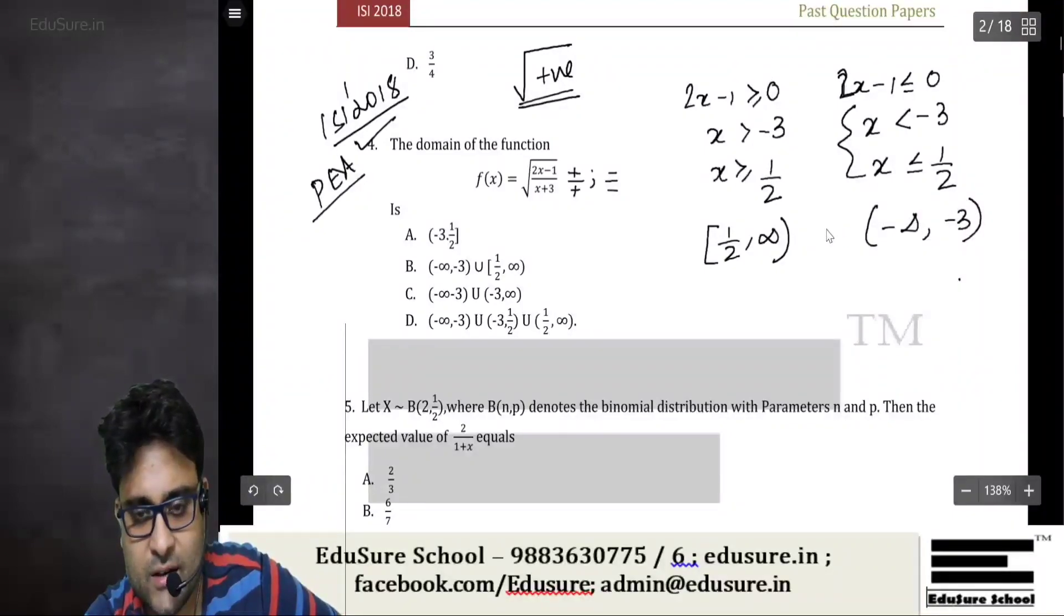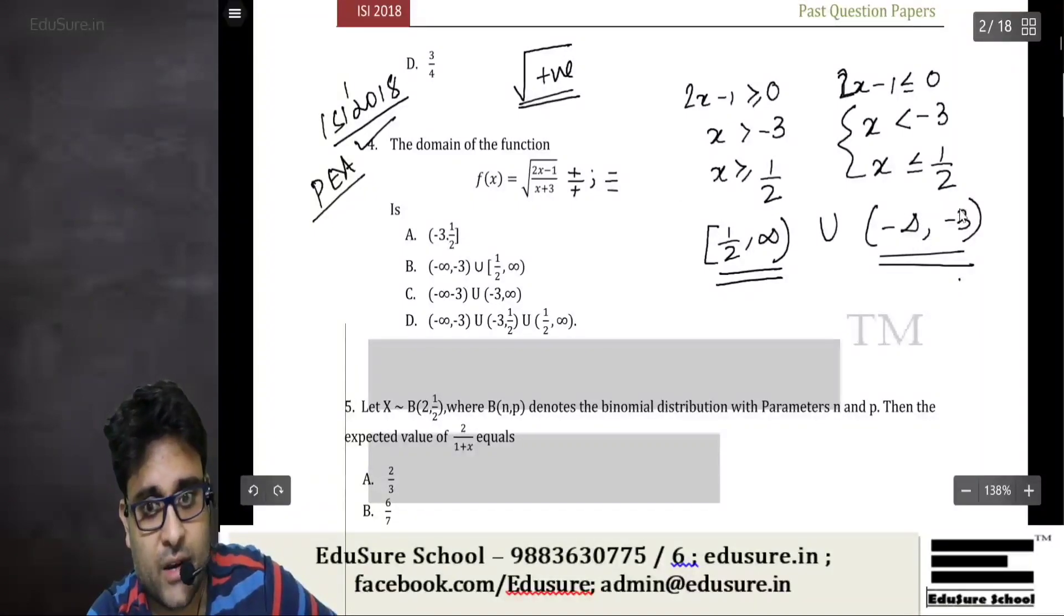So in both these intervals this function will be defined. The domain for this function will be (-∞, -3) union [1/2, ∞) with 1/2 being the closed interval. Answer is option B.